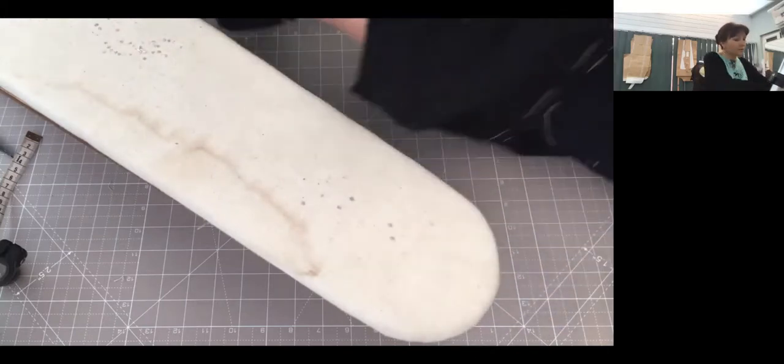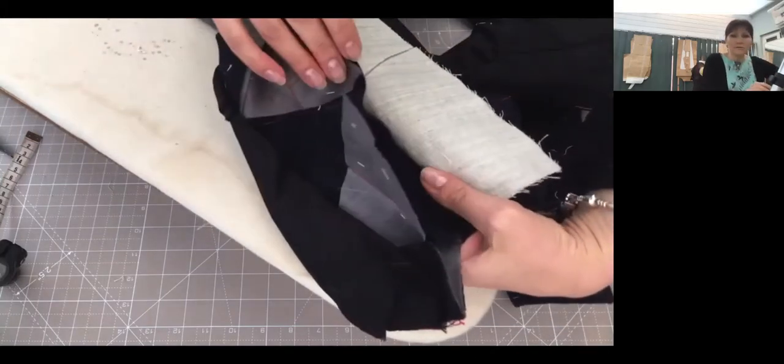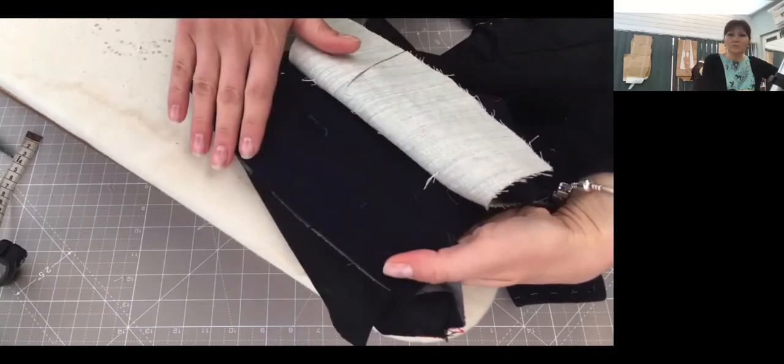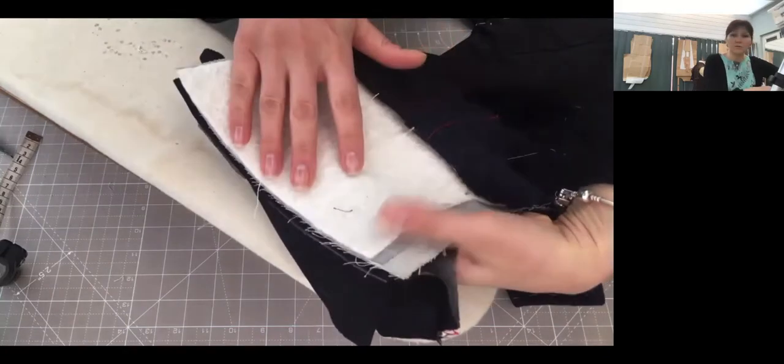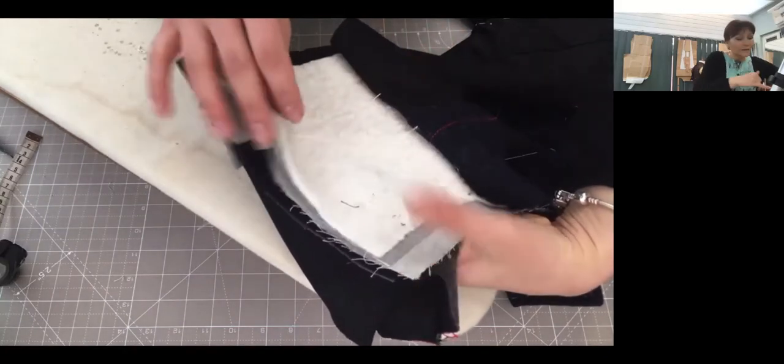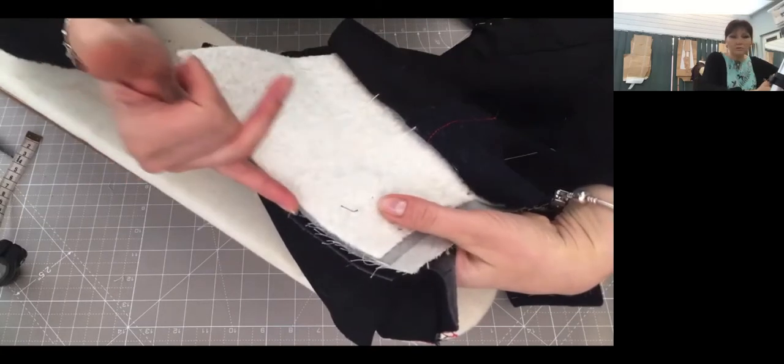You would iron your seam allowance towards the back and the canvas will cover that, and again you have to trim your canvas.